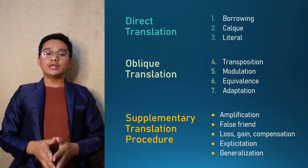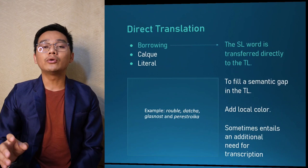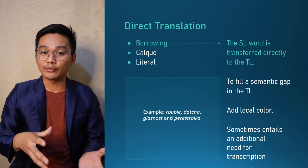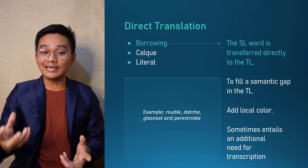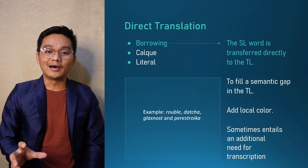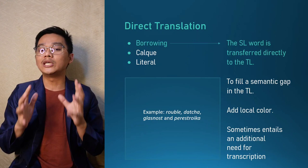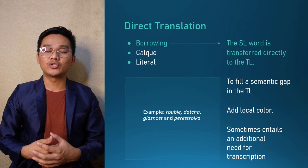The first strategy is direct translation, which covers three specific procedures: borrowing, calque, and literal translation. With borrowing, a word from the source language is transferred directly to the target language. For example, these English words were originally Russian: ruble, dacha, glasnost, and perestroika. Those words are borrowed from Russian and incorporated into English.